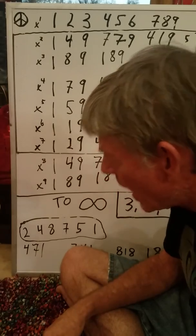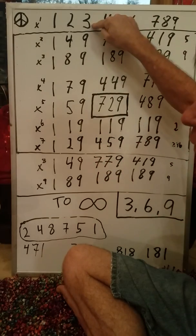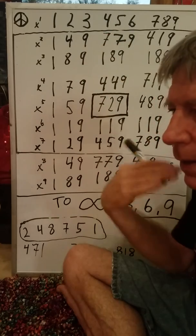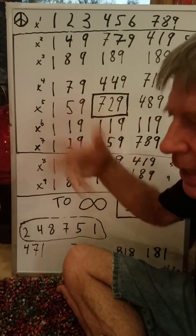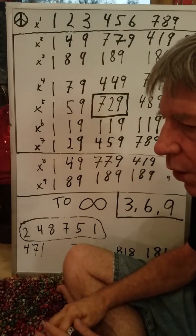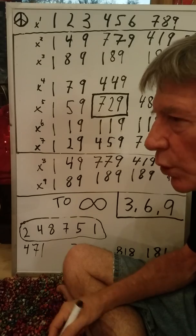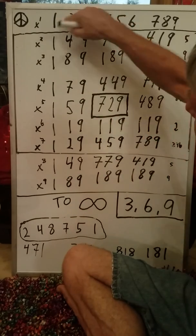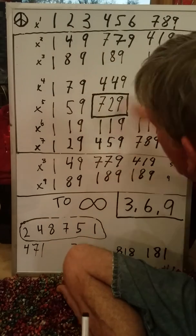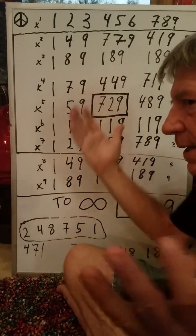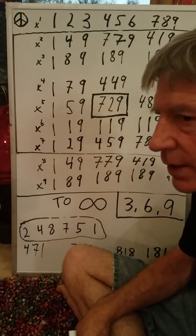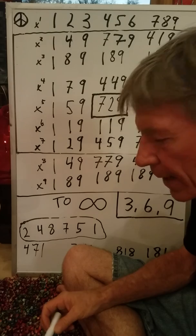39 squared is 1,521: 1+5=6, +2=8, +1=9. So that goes to infinity — it will keep following the same pattern. All you have to realize is that any 2-digit, 3-digit, 5-digit, 10-digit, or million-digit number always reduces back to one of these numbers — 1 through 9 — and then it will follow this sequence. What it does is take the entire universe of numbers and simplify it down into this very concise group of numbers, and it will never fail you.